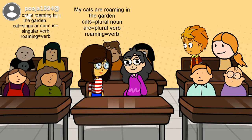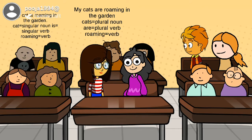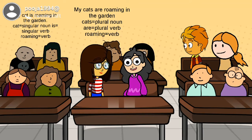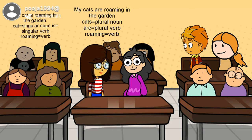It will be a singular verb because 'is' comes before 'roaming.' So it will be a singular verb. And if you take an example of a plural countable noun in the same sentence, it will be: 'my cats' — C-A-T-S — 'are roaming in the garden.' Cats is a plural noun, 'are' is a plural verb, and 'roaming' is the verb. 'Are' is a plural verb because it comes before the word 'roaming.' So it will be a plural verb. In this way, you can differentiate what is a singular countable noun and what is a plural countable noun.